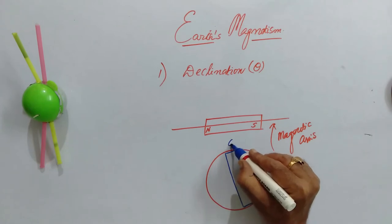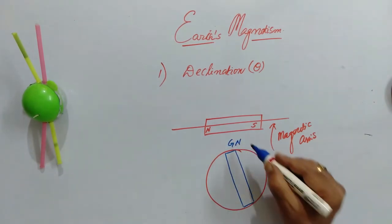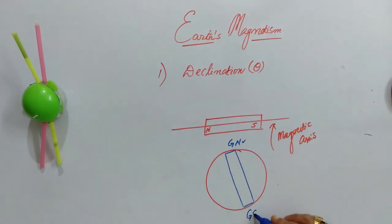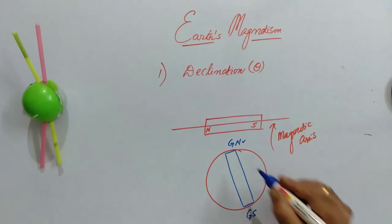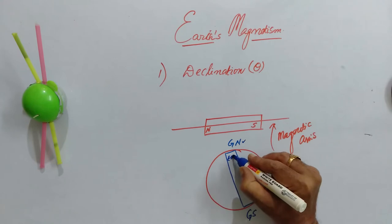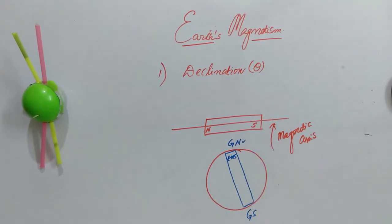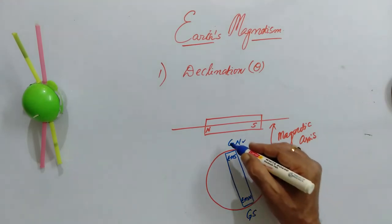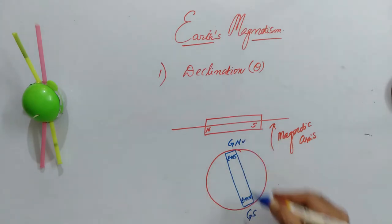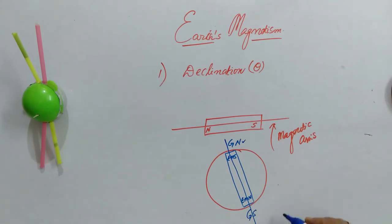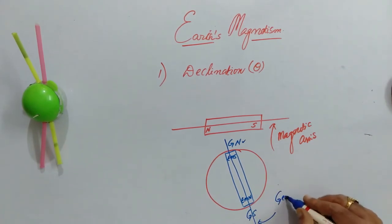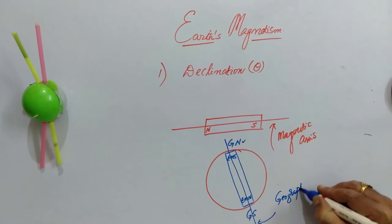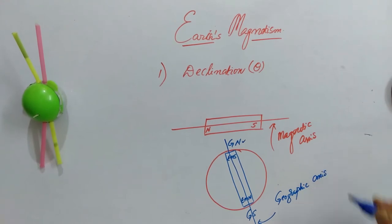If you consider this as geographic north and this as geographic south, then the pseudo-magnet's south pole exists at geographic north. Similarly, Earth's magnet's north pole exists at geographic south. When we connect geographic north and geographic south, we get a line called the geographic axis.